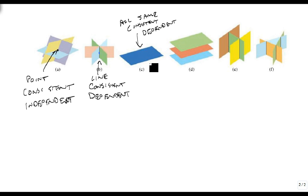They might be multiples of each other, but they're all, in essence, the same equation. And so when they're all the same, then we still have a consistent dependent.